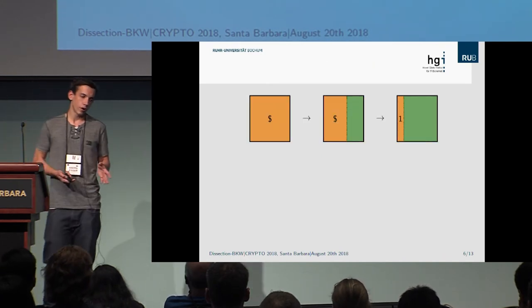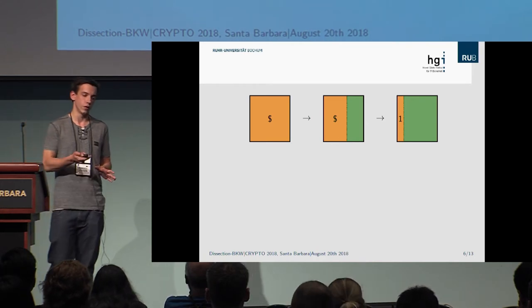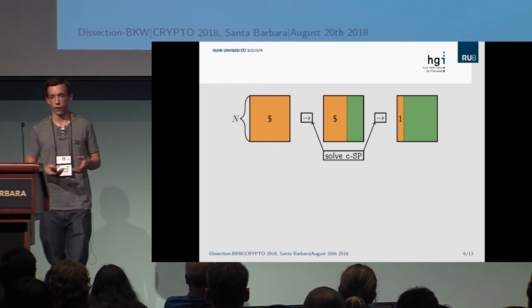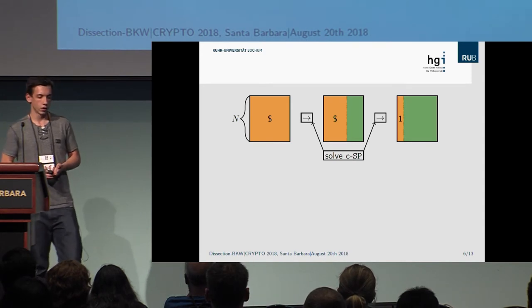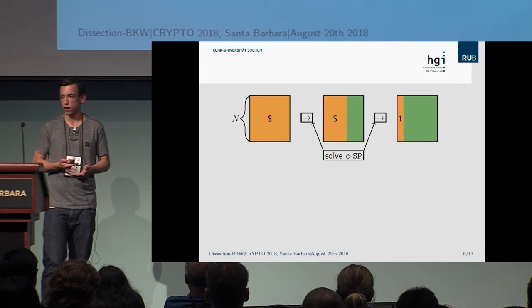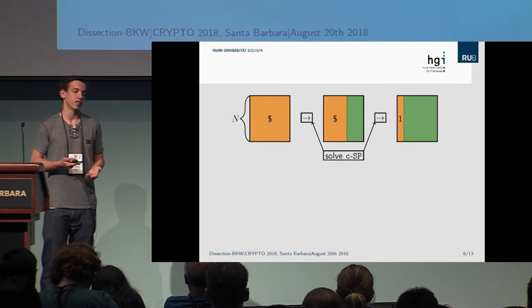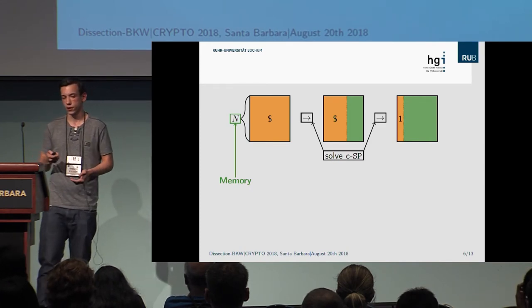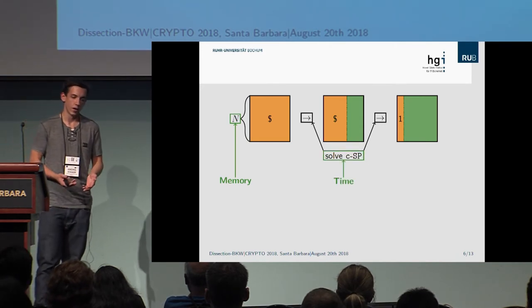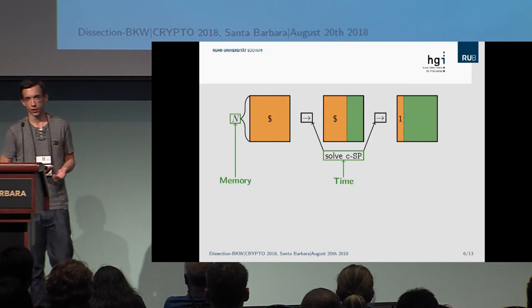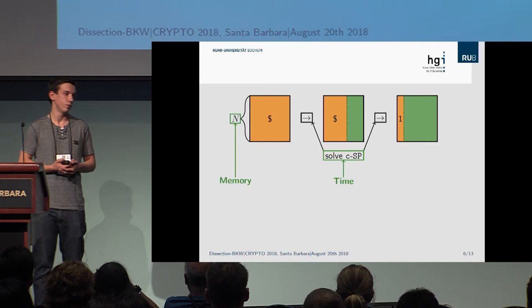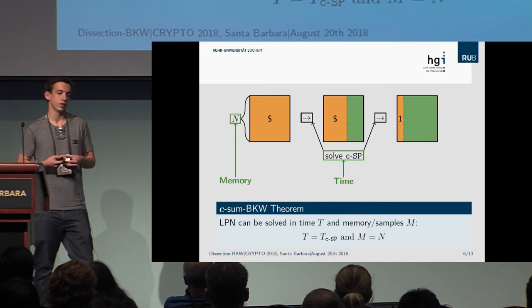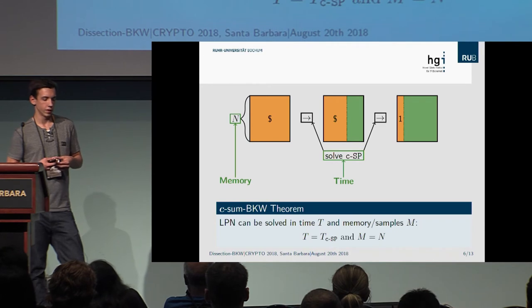We are now ready to state the framework. We start with a list of size N and repeatedly solve the C-SUM problem until we generate unit vectors, then perform a majority vote for one bit of the secret. The memory complexity depends only on the initial list size, which is determined by the chosen C-SUM instance. The time complexity depends on the algorithm used to solve the C-SUM problem. Therefore, the time and memory complexity of our algorithmic framework equal the time and memory complexity of the algorithm used to solve the C-SUM problem.